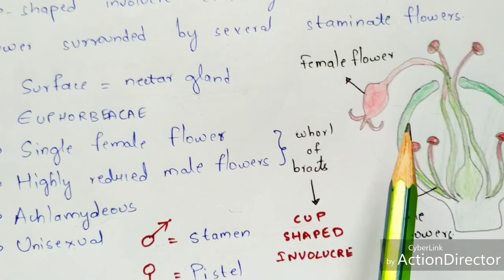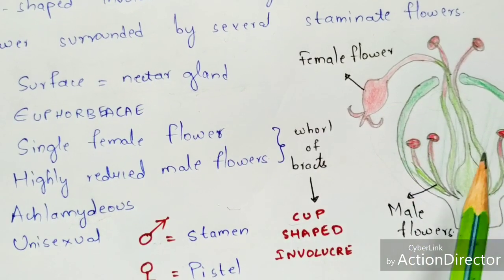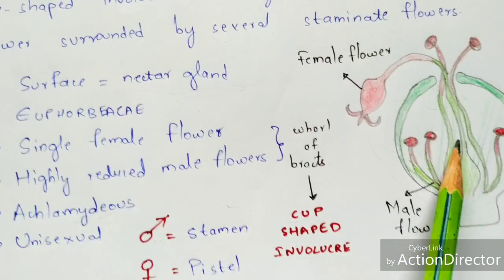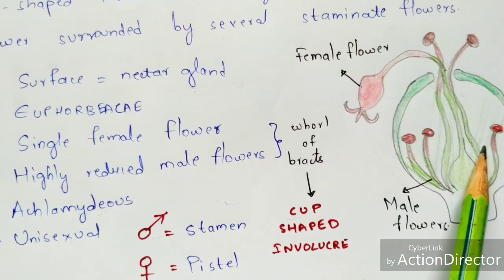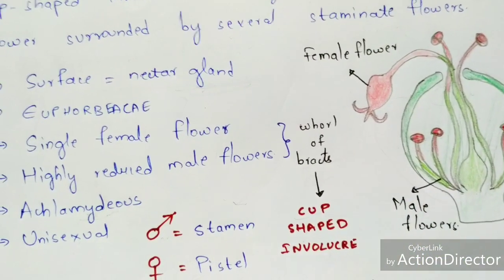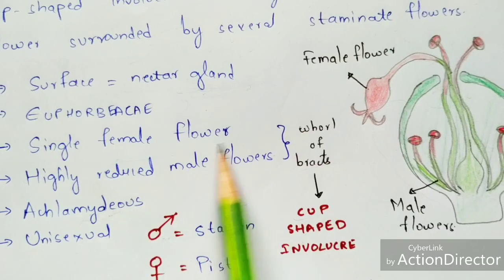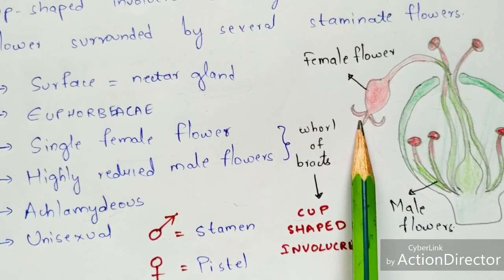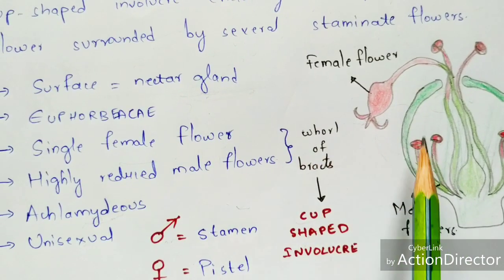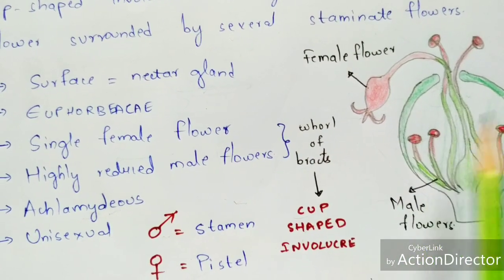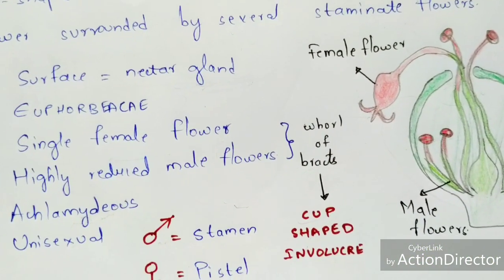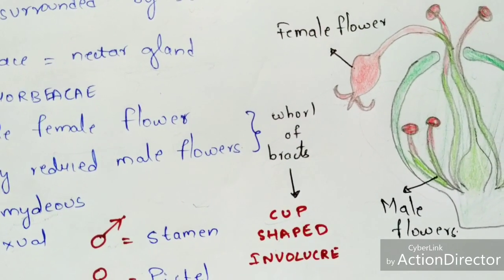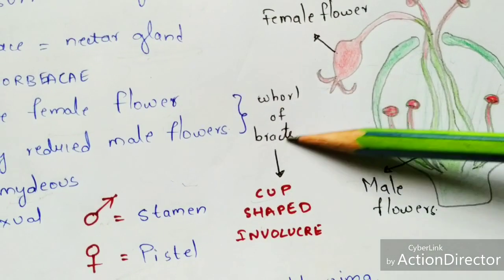In cyatheum inflorescence, female flowers as well as male flowers are present. The single female flower will be present — only one long female flower — and highly reduced male flowers will surround it. These female flowers and male flowers are present within bracts.